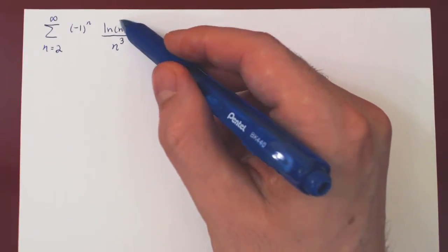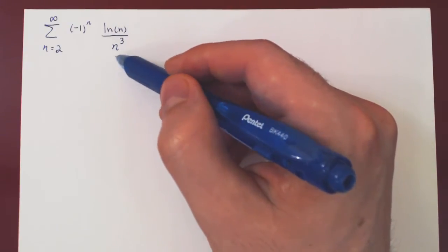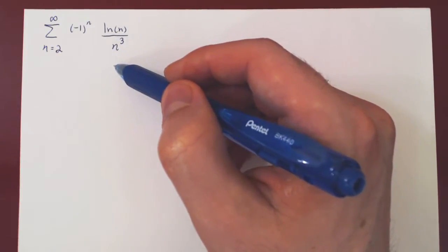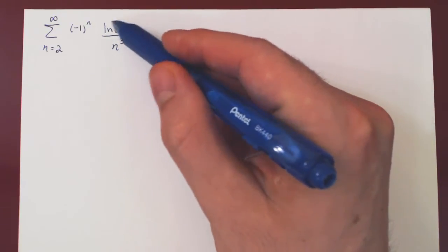We could show, one, that this function is eventually decreasing by taking the derivative of ln of x over x cubed, and showing that when x is large enough, the derivative is negative, which proves that bn is eventually decreasing.